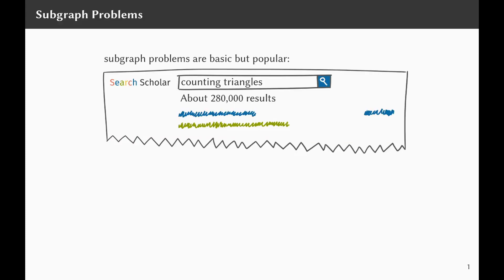Subgraph problems are very basic problems in graph theory, but they are also very popular. For example, if you type 'counting triangles' into your favorite search engine, you will get a lot of results and a lot of algorithms to count triangles efficiently in graphs. In this talk, I will discuss something slightly different: sampling subgraphs in sublinear time.